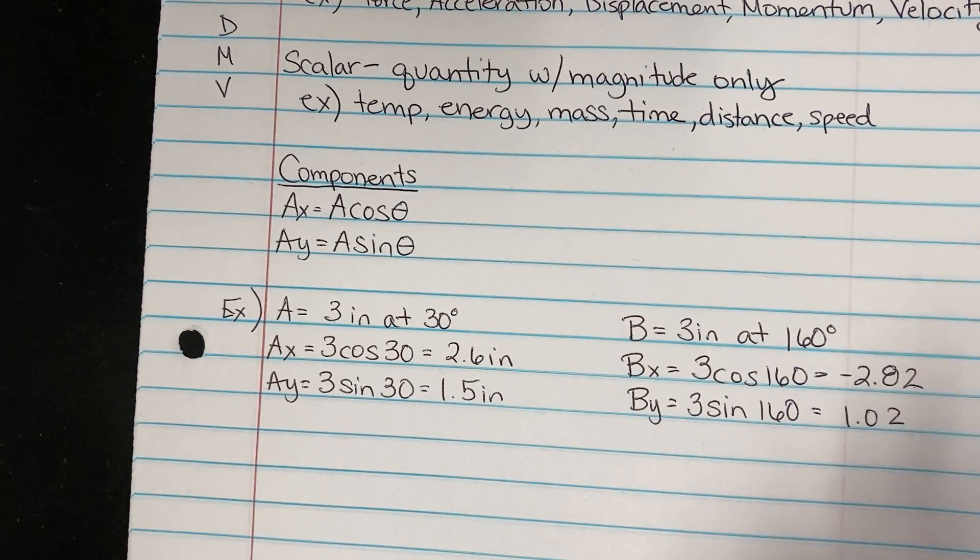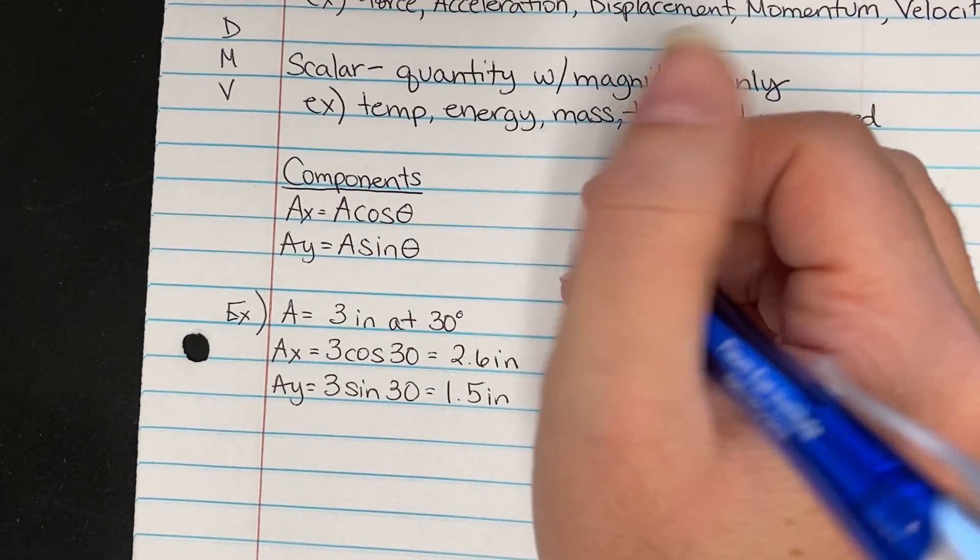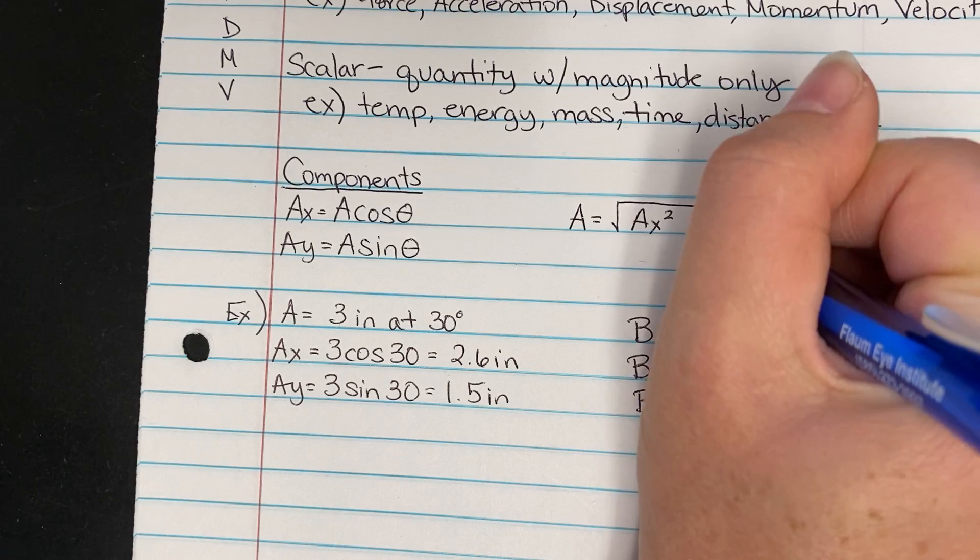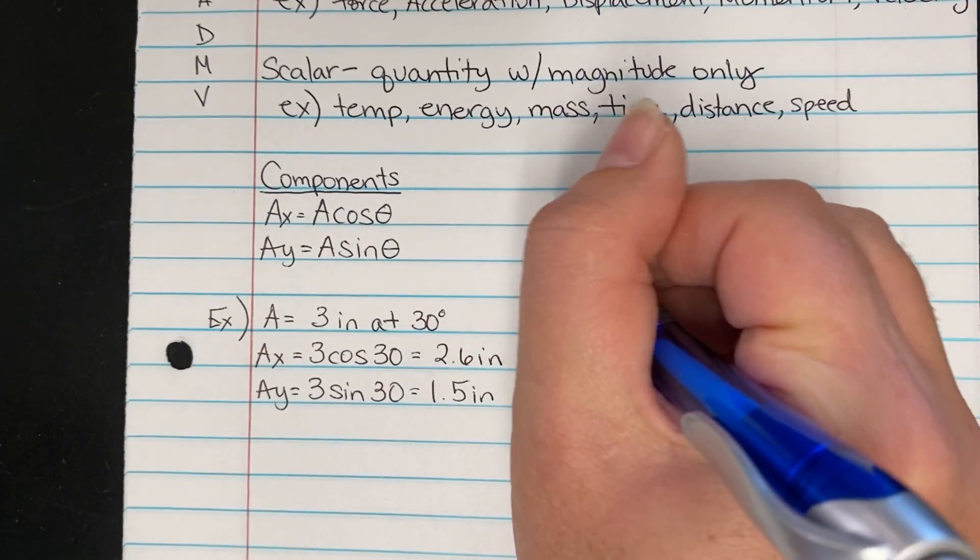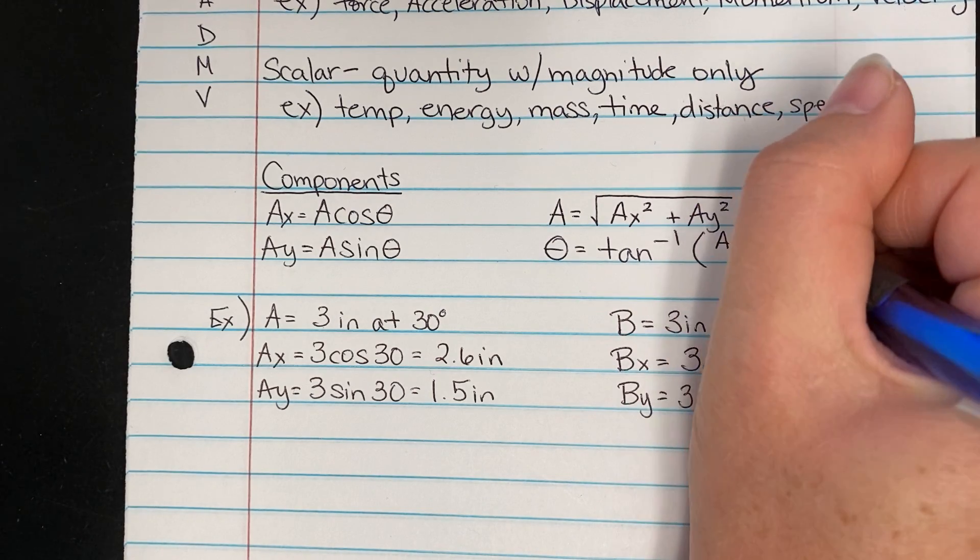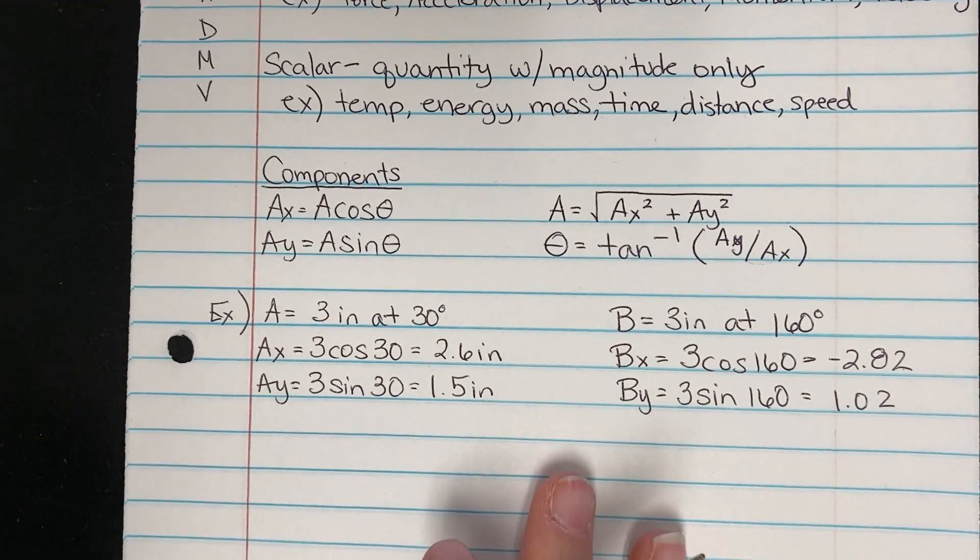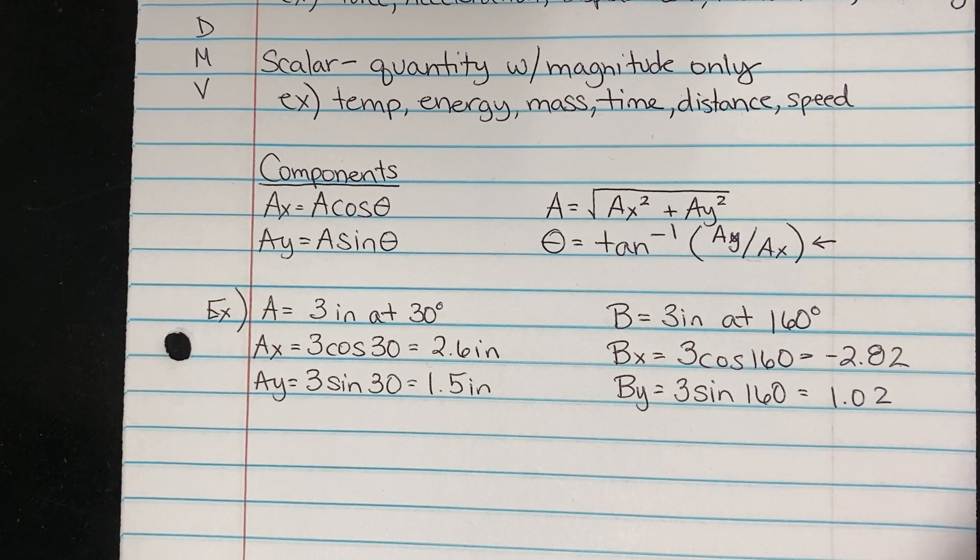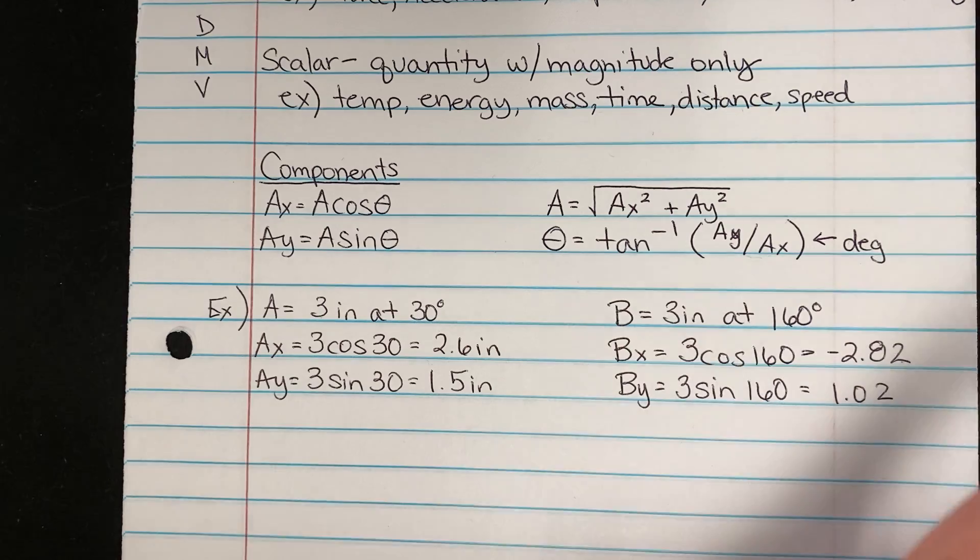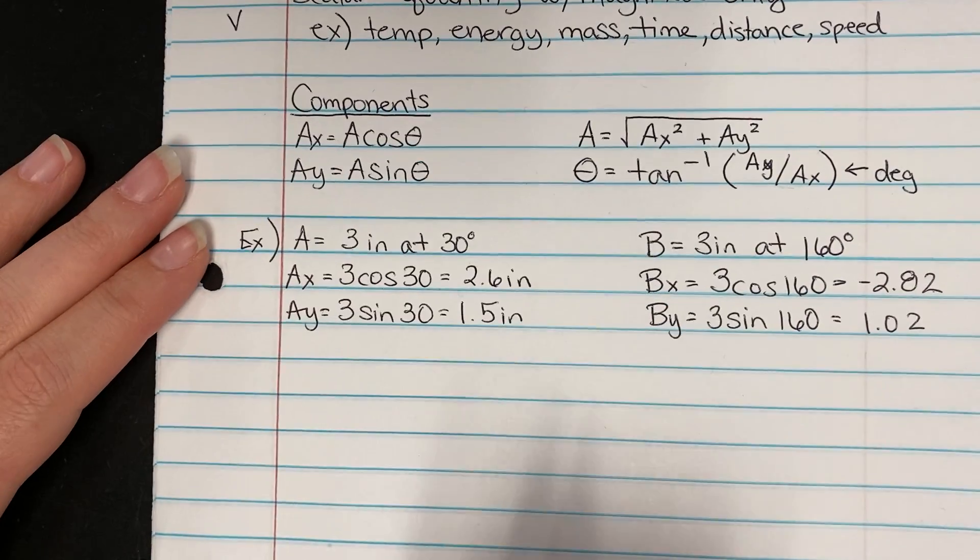Now sometimes they give you the opposite of these, where they give you the components and they want you to find the magnitude and direction. This is just a fancy form of the Pythagorean theorem. If I take the X component and square it plus the Y component and square it, I take the square root, I should be able to get the hypotenuse. And I can find the angle by using the inverse tangent of AY over AX. This needs to be in degrees. Make sure that you're putting your phone in degree mode or you're going to get something pretty crazy.